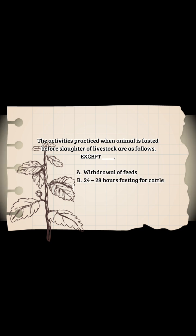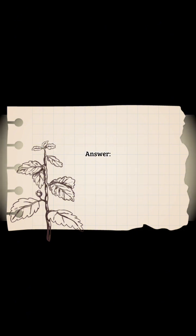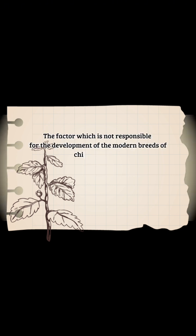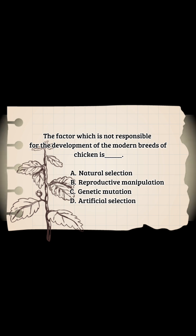The activities practiced when an animal is fasted before slaughter of livestock are as follows, except: A - withdrawal of feeds, B - 20 to 28 hours fasting for cattle, C - 12 to 24 hours fasting for pig, D - withdrawal of water. Answer: D - withdrawal of water.